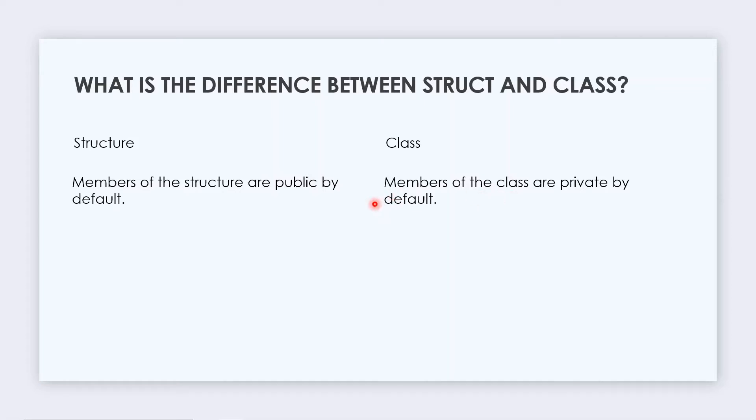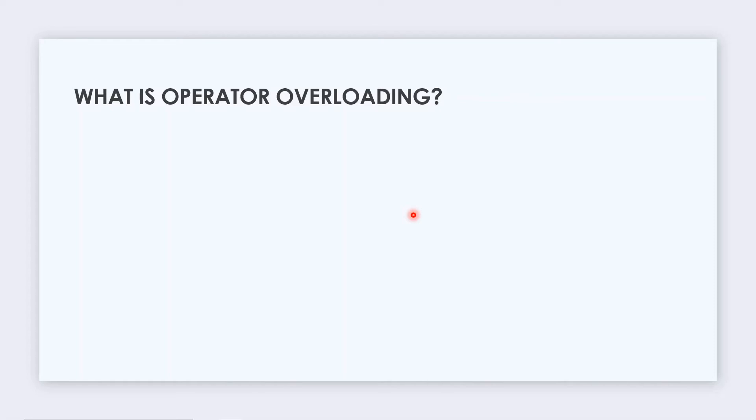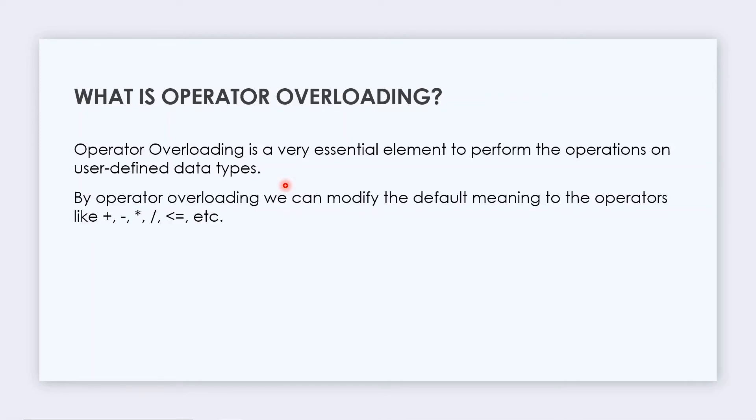The next question is: What is operator overloading? Operator overloading is a very essential element to perform operations on user-defined data types. By operator overloading we can modify the default meaning to operators like plus, minus, multiplication, division, and less than or equal to. For example, addition of numbers is 2 plus 1, and in C++ to concatenate two strings we also use the plus sign. So in mathematics plus means addition, but in C++ we're using it for concatenating strings, which means we are using operator overloading.